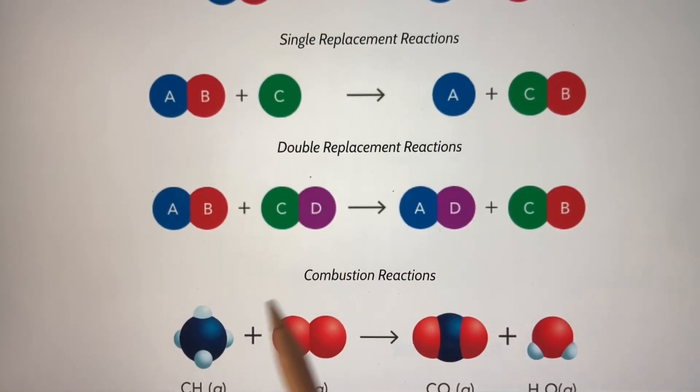And then we have double replacements, which is similar to this. We're going to have a switching going on. For example, in this situation with AB and CD, and then over here we have AD and CB. They switch places. One of these parts of these compounds are switching. And that's really all that's happening.